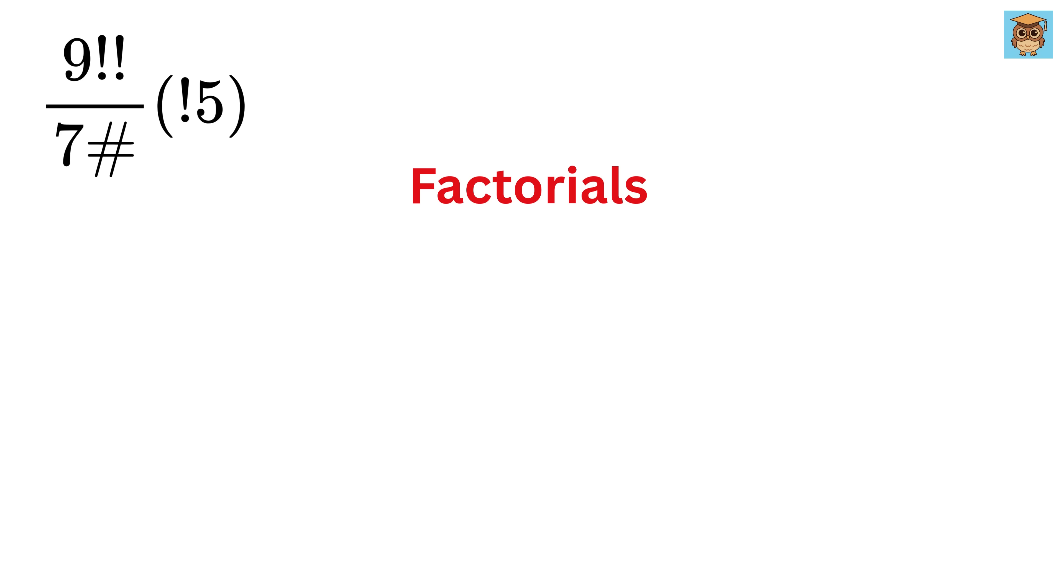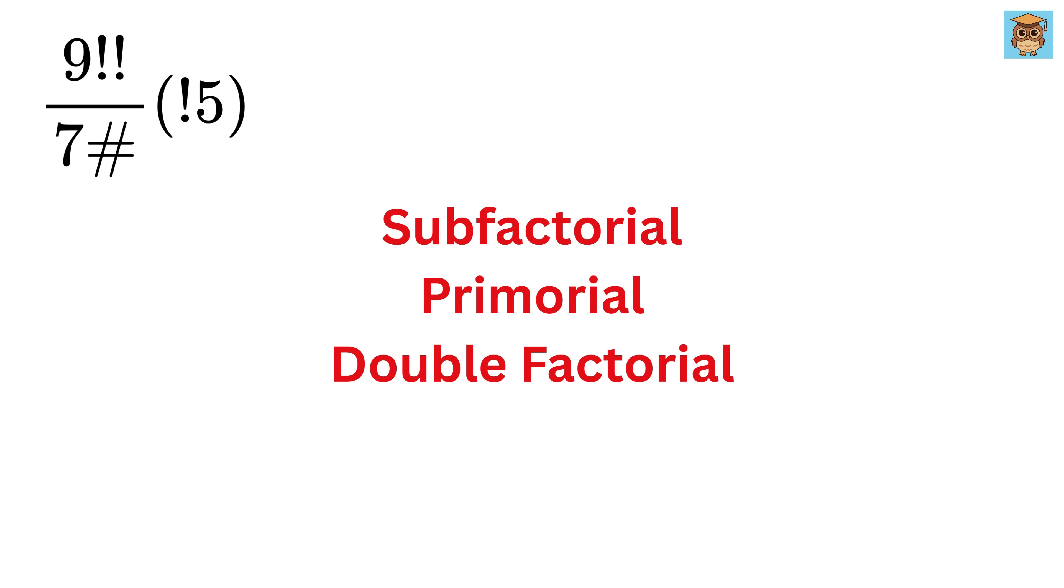You all might have heard about factorials where we put an exclamation mark in front of a number. Like 4 factorial equals 4 times 3 times 2 times 1, which is equal to 24. But do you know that we have other types of factorials as well? And we will explore a few of them with the help of this question.